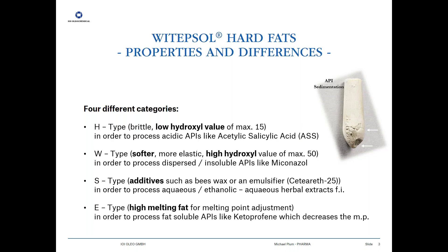Last but not least, we have the E type. E type fats are hard fats with higher melting points, and these types are only used for melting point adjustment. This is important if you are processing APIs like ketoprofen, which are completely soluble in fat. If this is the case, there will be a decrease of the melting point, and in order to shift the melting point up into the proper region, you have to add certain amounts of higher melting fat. The specific amount depends on the API and its concentration.